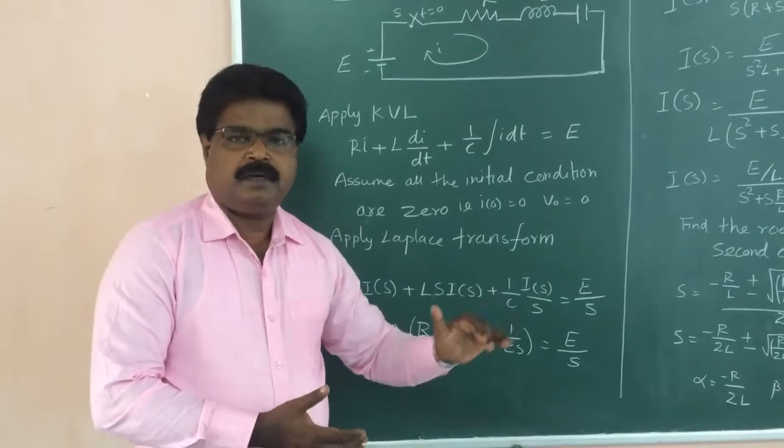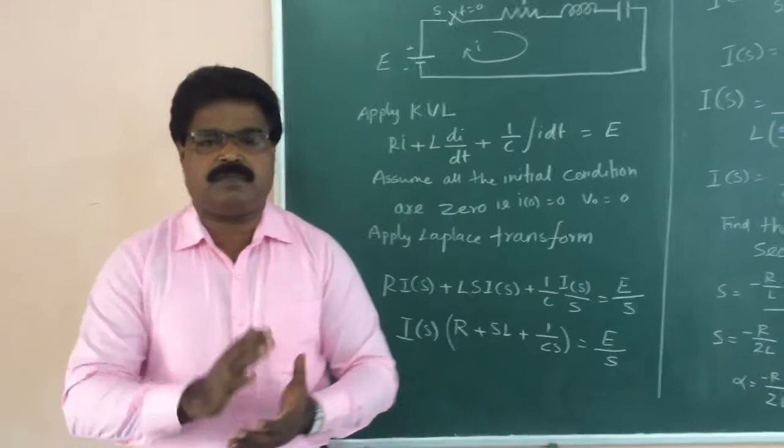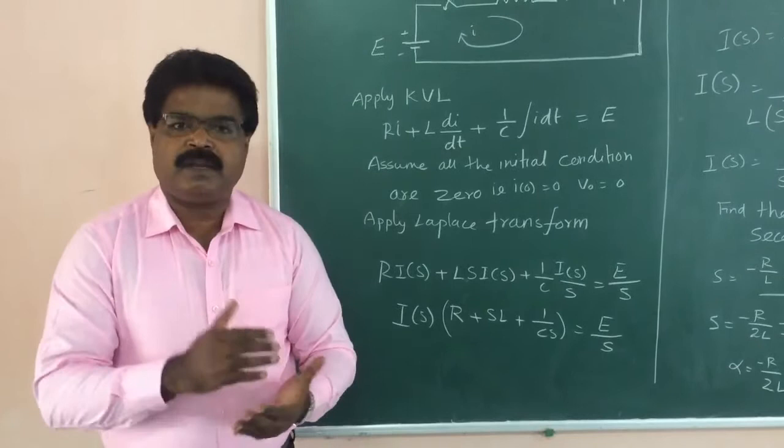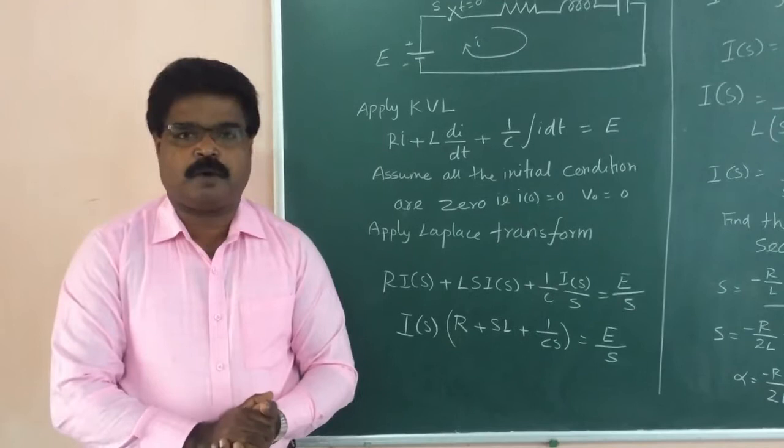For derivation purposes, we are assuming all initial conditions are zero. That means the initial current in the inductor and the initial voltage on the capacitor are both zero. But in the case of a problem, definitely they will give initial current as well as initial voltage, and you must consider that while solving the problem.